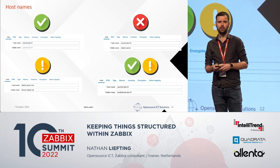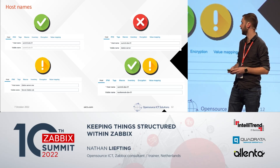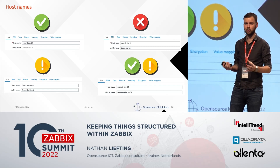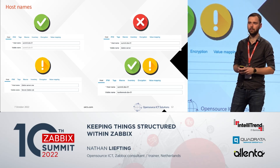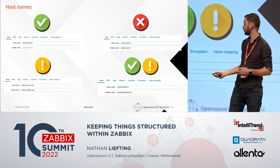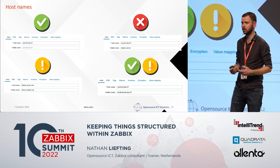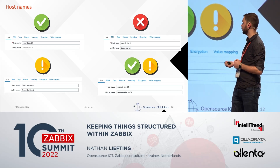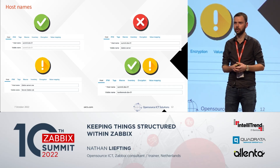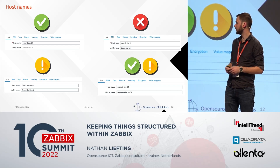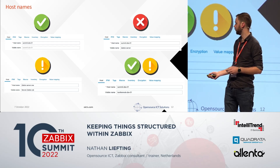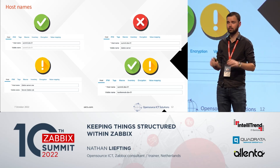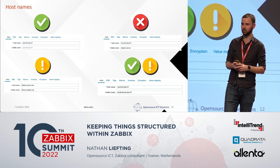What about the visible name? I always tell my trainees: do not use it unless you need it. It has local language support, so we could use it to create a localized Zabbix environment — but we can only put one language there. The real downside is that your configuration, like your trigger expressions, will still use the actual host name. The visible name is just used in the frontend. That makes things a little complicated, and if you don't need it, just don't fill it in. Sometimes we have the urge to fill in every field — this is one of those cases where that's not required.